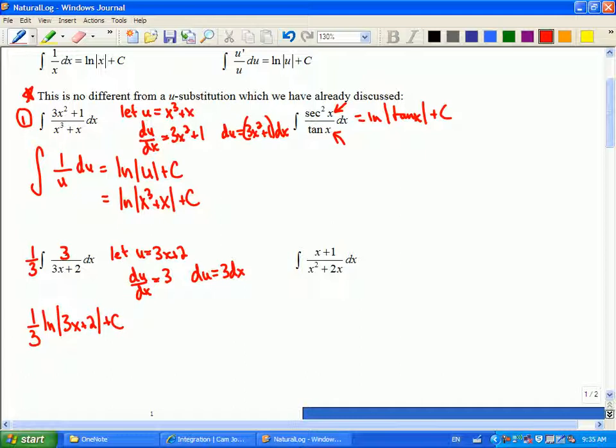the bottom is the function, so I could just rewrite this as one-third natural log absolute value 3x plus 2. Now, it's certainly not a race. If you do the full substitution on this, it's going to work out exactly the same, and you may find that better.